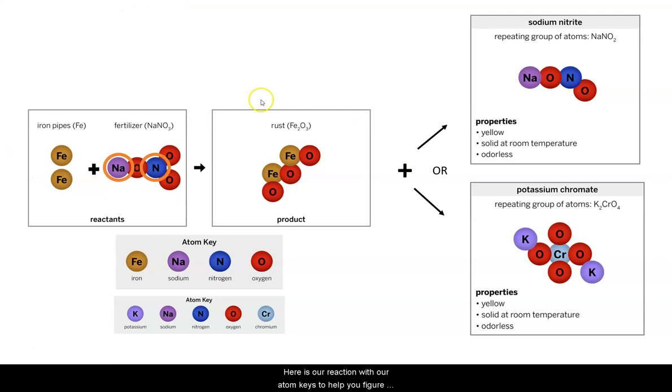Here is our reaction with our atom keys to help you figure out what these different colors and symbols mean. We know that the iron pipes reacted with the fertilizer to cause rust. Because we know all atoms have to be accounted for, we went back and looked at the water substance to see if there was anything else in there.